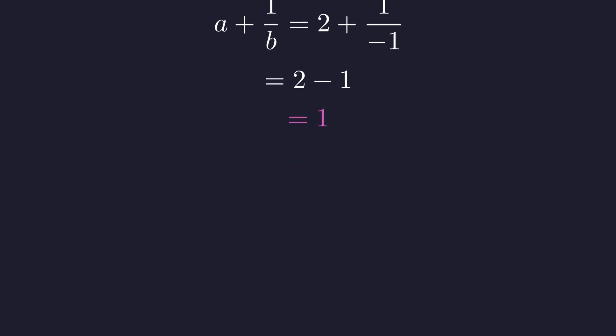Now for B plus 1 over C, we get negative 1 plus 1 over 1 half. 1 divided by 1 half is 2, and negative 1 plus 2 is also 1. The second expression matches. Finally, C plus 1 over A is 1 half plus 1 half, which is 1. The third expression also matches.